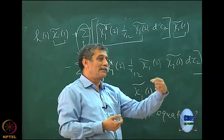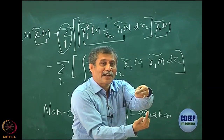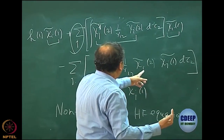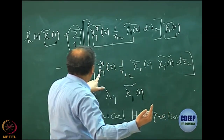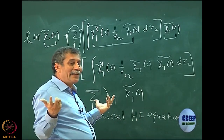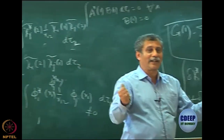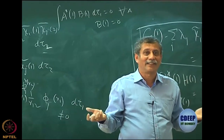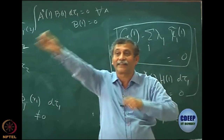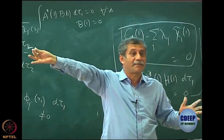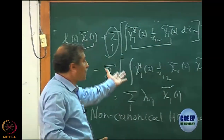Now this electron 1 is sitting in chi j 1. So this was chi i 1, this was chi j 2, and now they have flipped. It has gone to chi j 1, and the d tau 2 interpretation is also very difficult — it is on 2 on chi i and this is chi j star. I do not know what interpretation to give. That is the nature of the exchange, the nature of the anti-symmetry — electrons are not classical. I could not give a classical interpretation to exchange interaction; I am not able to give a classical interpretation to this operator.